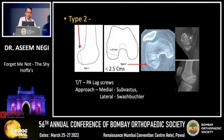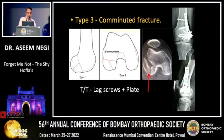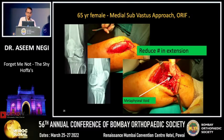In Type 2 you ought to use posterior-to-anterior lag screws — on the medial side by sub-vastus approach, and on the lateral side by the swashbuckler approach. Type 3 Hoffa fractures are rare, comminuted, and use of plates is mandatory along with lag screws.